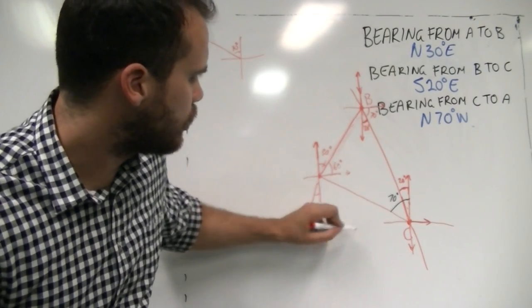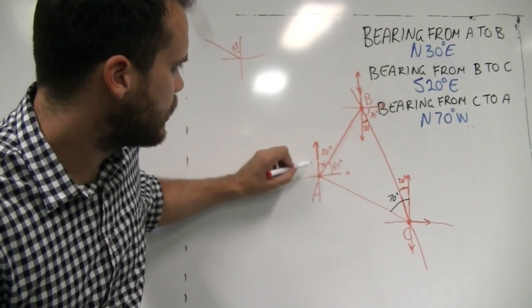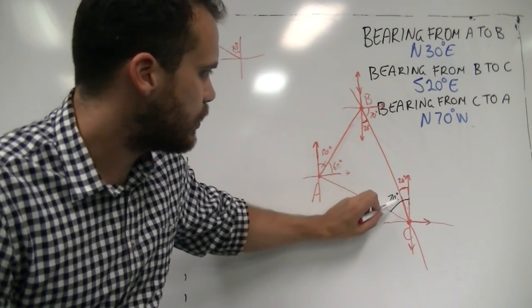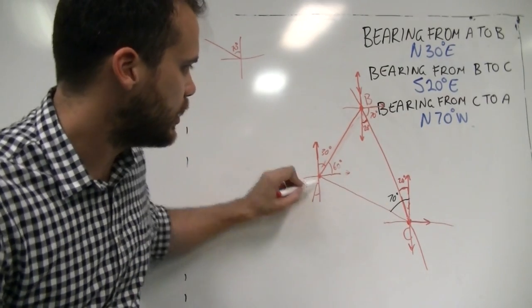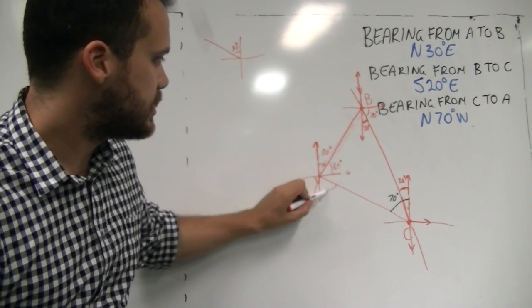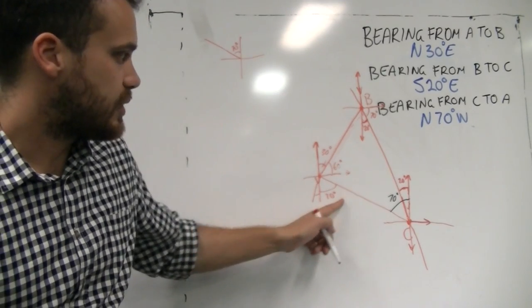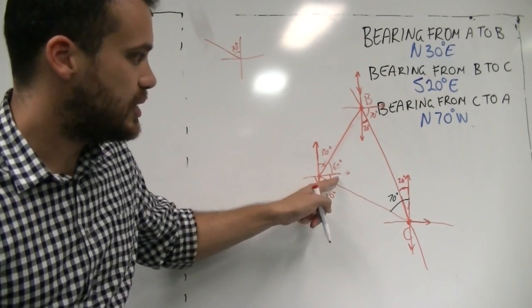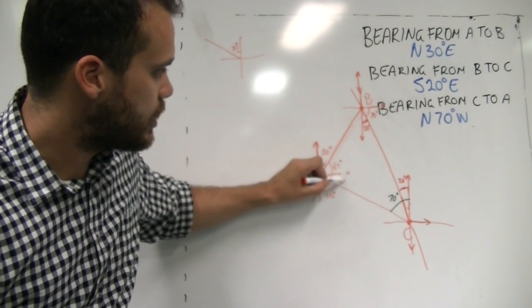Similarly, we can go through a whole bunch of these and do very similar things with them. It takes a little bit of thinking about. Let's see what other ones we can do. We can see that this one is 70 degrees from north to that line. These lines are parallel. That line is parallel with that line, which means that this is also going to be 70 degrees.